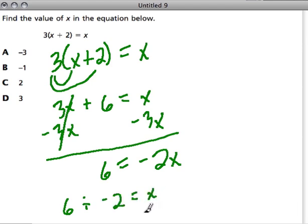6 divided by negative 2 is a positive divided by a negative. That's a negative value. So it's negative 3 equals x, and choice A.